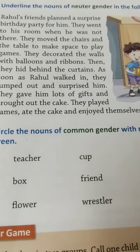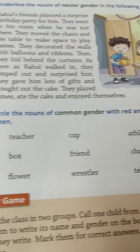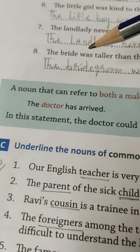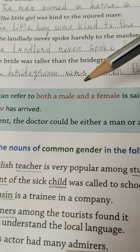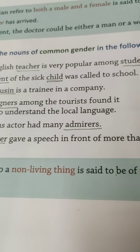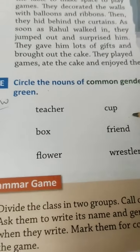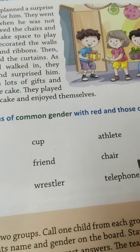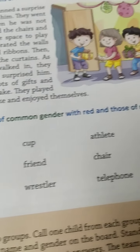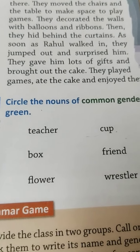Now we will see exercise D. Circle the nouns of common gender with red and those of neuter gender with green. A noun that can refer to both a male and a female is said to be of common gender. A noun that refers to a non-living thing is said to be of neuter gender — examples: chair, table, tree. Common gender — color red; neuter gender — color green. Okay, children, this is your homework. You write it down in the copy. Thank you.